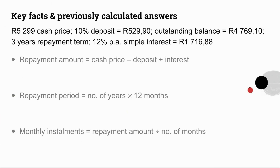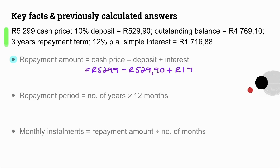Everything we have calculated and the key facts are summarized for reference. Let's calculate our repayment amount. Repayment amount equals cash price minus deposit plus interest: R5,299 minus R529.90 plus R1,716.88, giving a repayment amount of R6,485.98.